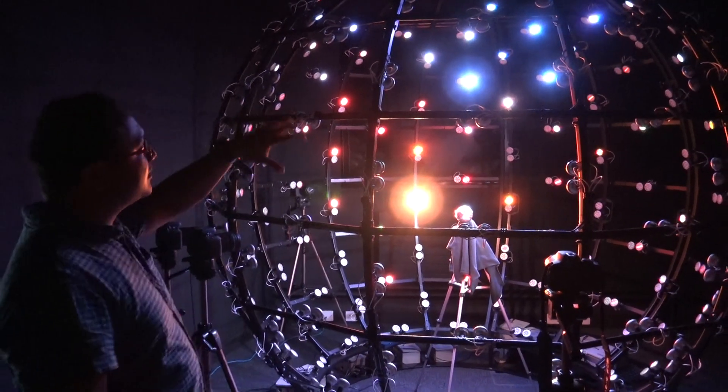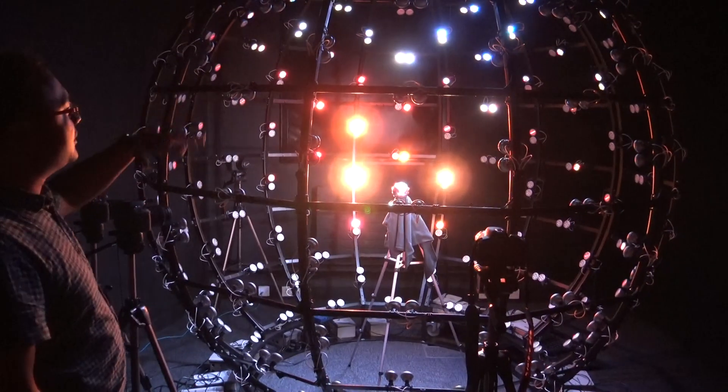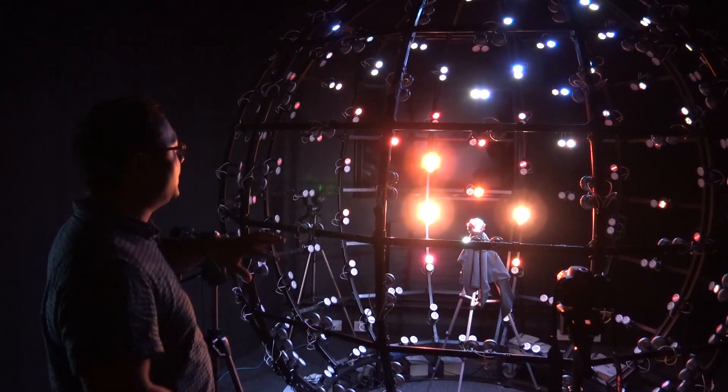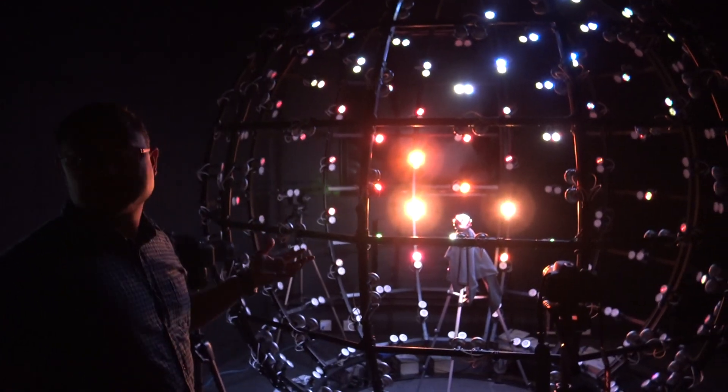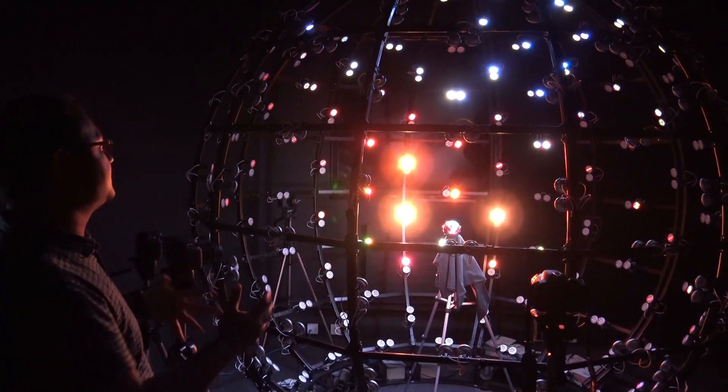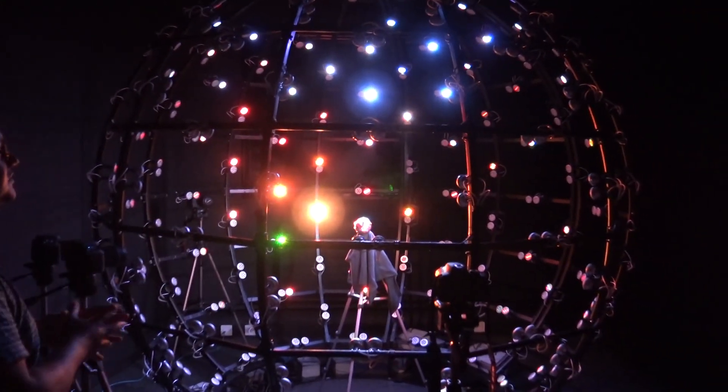Instead, when we combine it with our white lamps, we produce a much better light for the desaturated colors while using only the RGB lamps for the saturated colors. So this is a good combination, it turns out.